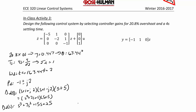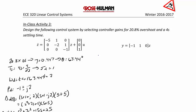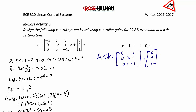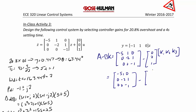Next we derive A minus BK. A minus BK equals the matrix [[-5, 1, 0], [0, -2, 1], [-k1, -k2, -1 - k3]], combining the original A matrix entries with the subtracted BK gain terms to yield the final combined matrix.